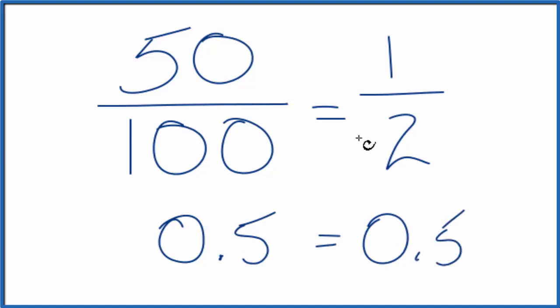So the value is the same. We've just written it differently. This is a simplified form of the fraction. These are called equivalent fractions, because their values are equal.